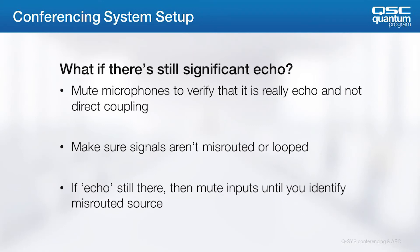What if you've tried the steps as outlined and still have echo? One common problem is that the echo heard by the far end isn't echo at all. A quick way to check this is to mute all the conferencing mics and see if the far end still hears themselves. If so, the conferencing receive signals are accidentally looped or misrouted. If there are any large matrix mixers in your design, carefully examine the cross points to make sure that the far-end receive signals aren't accidentally being sent directly back to the transmits. This routing can be tricky when multiple conferencing modes are required.